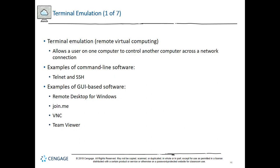SSH, or Secure Shell, is a collection of protocols that provides both authentication and encryption. With SSH, you can securely log on to a host, execute commands on that host, and copy files to or from that host. SSH encrypts data exchanged through the session and guards against a number of security threats, including unauthorized access to a host, IP spoofing, interception of data in transit, and DNS spoofing — in which a hacker forges server name records to falsify a host's identity. Depending on the version, SSH may use Triple DES, AES, Blowfish, or other encryption schemes.